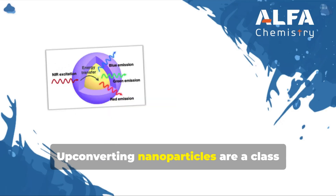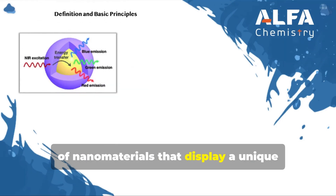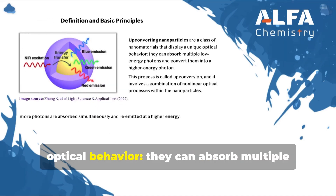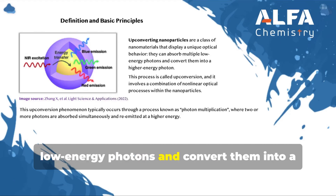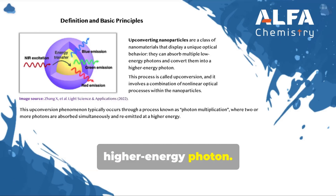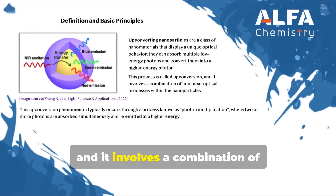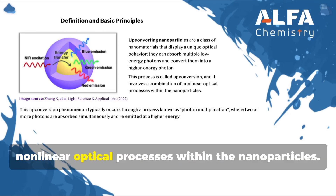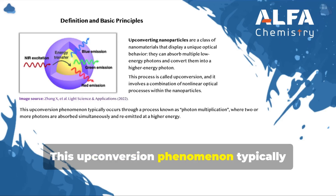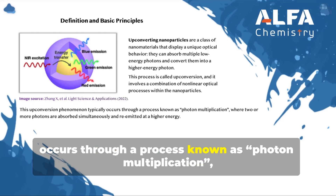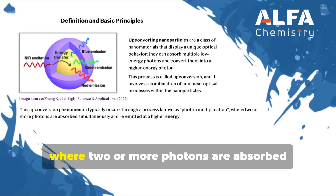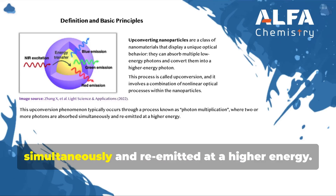Up-converting nanoparticles are a class of nanomaterials that display a unique optical behavior. They can absorb multiple low-energy photons and convert them into a higher energy photon. This process is called up-conversion, and it involves a combination of non-linear optical processes within the nanoparticles. This up-conversion phenomenon typically occurs through a process known as photon multiplication, where two or more photons are absorbed simultaneously and re-emitted at a higher energy.